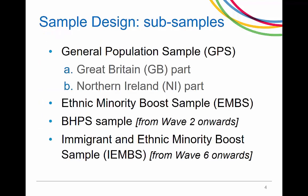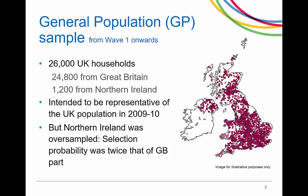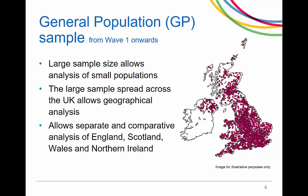There are four subsamples which were designed to achieve the aims we just discussed. The general population sample, or GPS, consists of approximately 24,800 households from Great Britain and around 2,000 households from Northern Ireland. It is intended to be representative of the UK population in 2009-2010, but addresses in Northern Ireland were chosen with twice the selection probability as compared to the Great Britain part. The large sample size allows analysis of small populations and the large sample spread across the UK allows for geographical analysis. The higher selection probability for the Northern Ireland part was to allow a Northern Ireland sample that was large enough to allow country-level analysis.